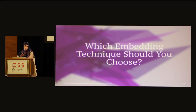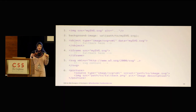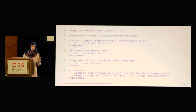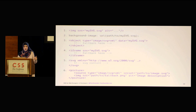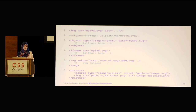Finally, which embedding technique should you choose? There are seven ways to embed an SVG: the embed tag (which almost no one uses anymore), image, background image, object, iframe, inline SVG, or using the picture element (which is similar to image but comes with a default fallback mechanism). So which one should you choose?